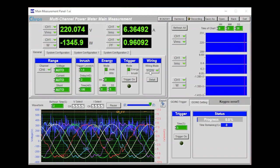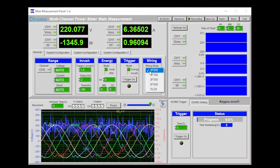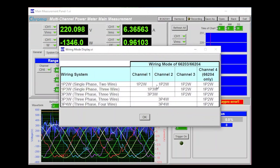The wiring options set the wiring mode of the power meter. You can click on the Details button to get a description of the wiring modes.